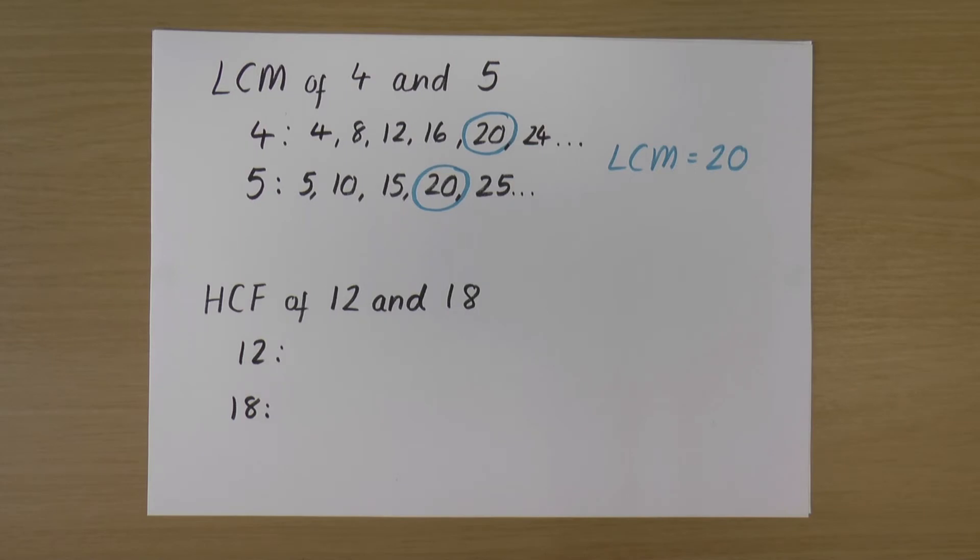So what are the factors of 12? 1 and 12, 2 and 6, 3 and 4, because those are the pairs we multiply together to give us 12.